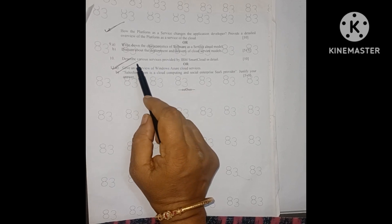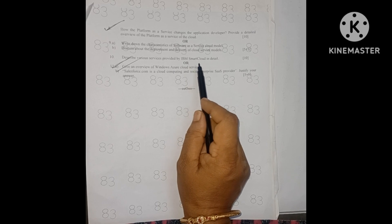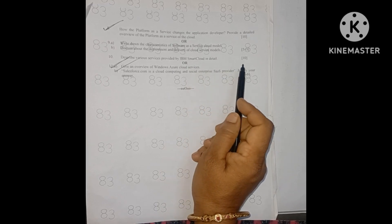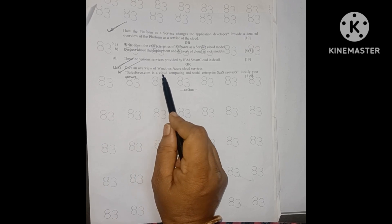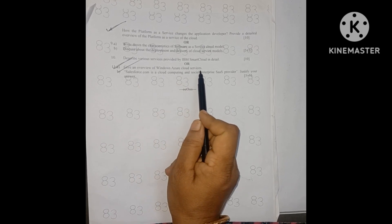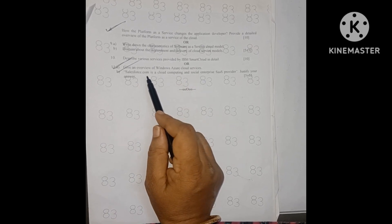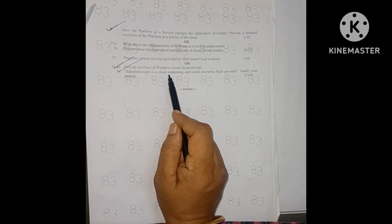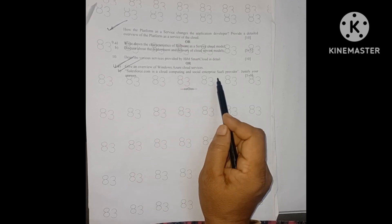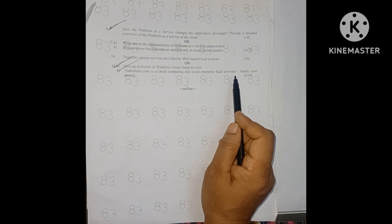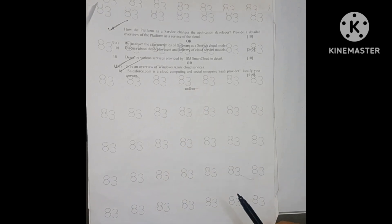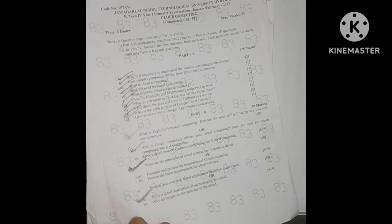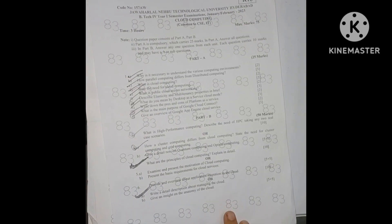The unit 5 questions are describe various services provided by IBM smart cloud in detail, a direct 10 marks question. Or give an overview of Windows Azure cloud services. Part B is salesforce.com is a cloud computing and social enterprise SaaS provider, justify your answer, 5 marks. These are all the previous question paper questions from January 2023.